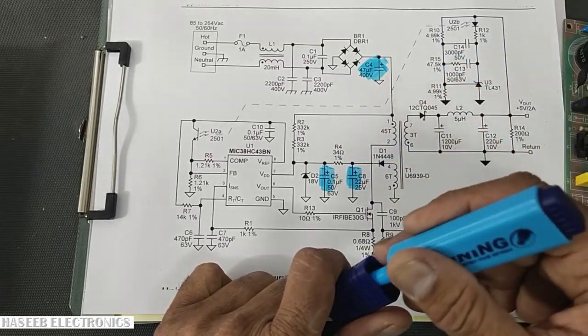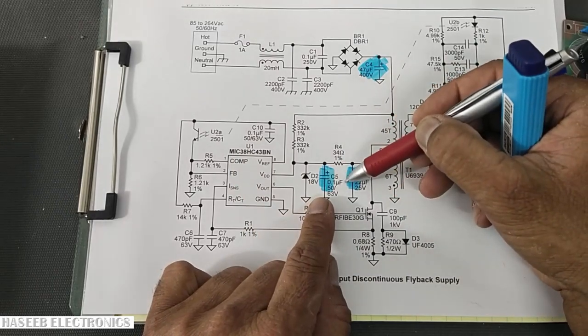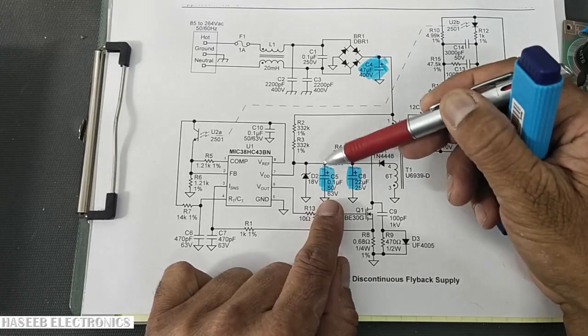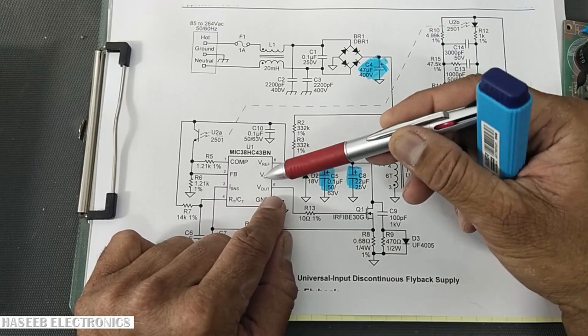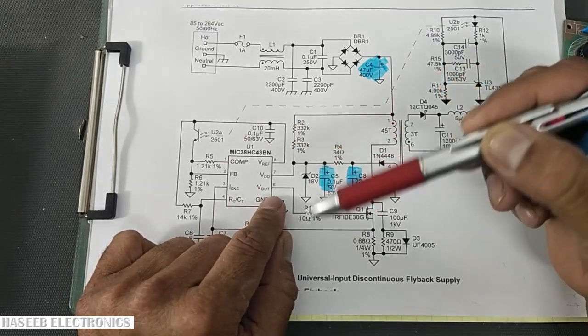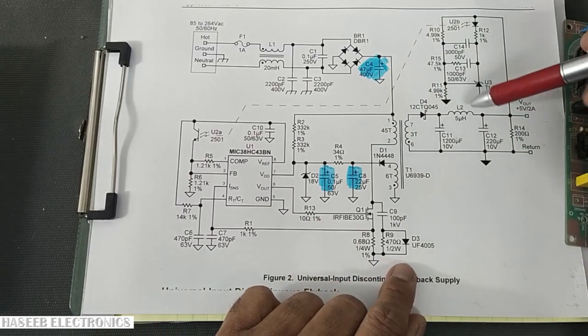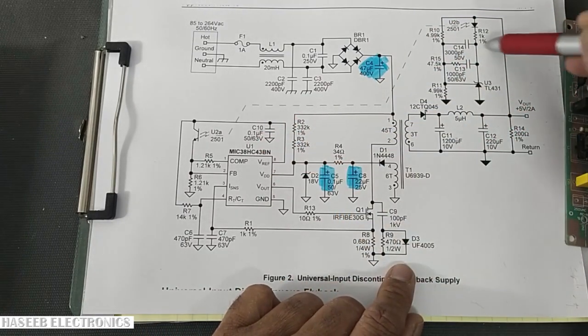Here are two capacitors. Sometimes power supplies have one, sometimes two capacitors. If this capacitor cannot store the charge properly, it cannot drive the IC in running mode. At that time, this IC can go in reboot mode. The IC is switching but it cannot take the feedback that the output voltage is built up in the secondary side.